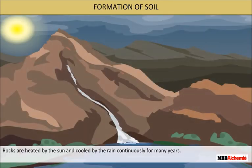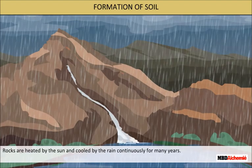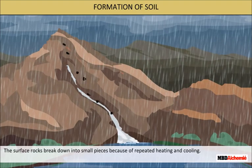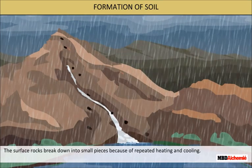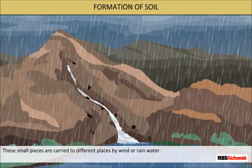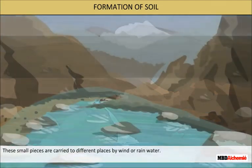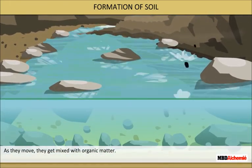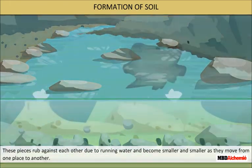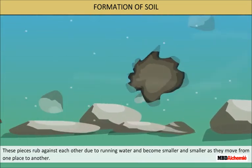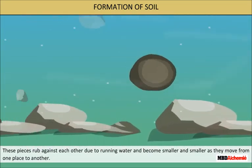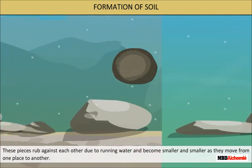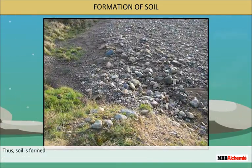Rocks get heated by the sun and cooled by the rain continuously for many years. The surface rocks break down into small pieces because of repeated heating and cooling. These small pieces are carried to different places by wind or rain water. As they move, they get mixed with organic matter. These pieces rub against each other due to running water and become smaller and smaller as they move from one place to another. Thus, soil is formed.